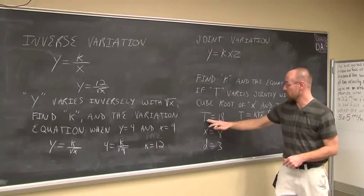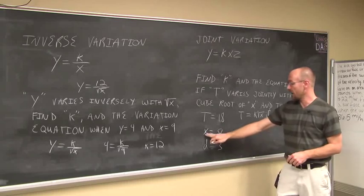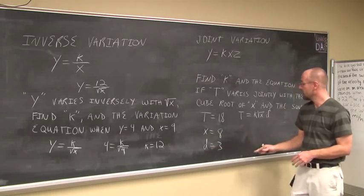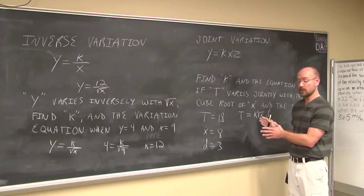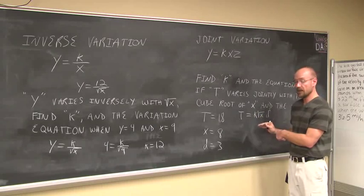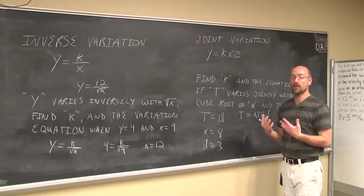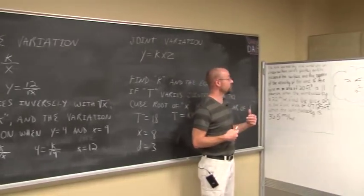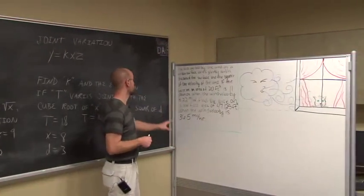Here is the given information: T is 18, X is 8, and D is 3. Find that constant of variation and the variation equation.